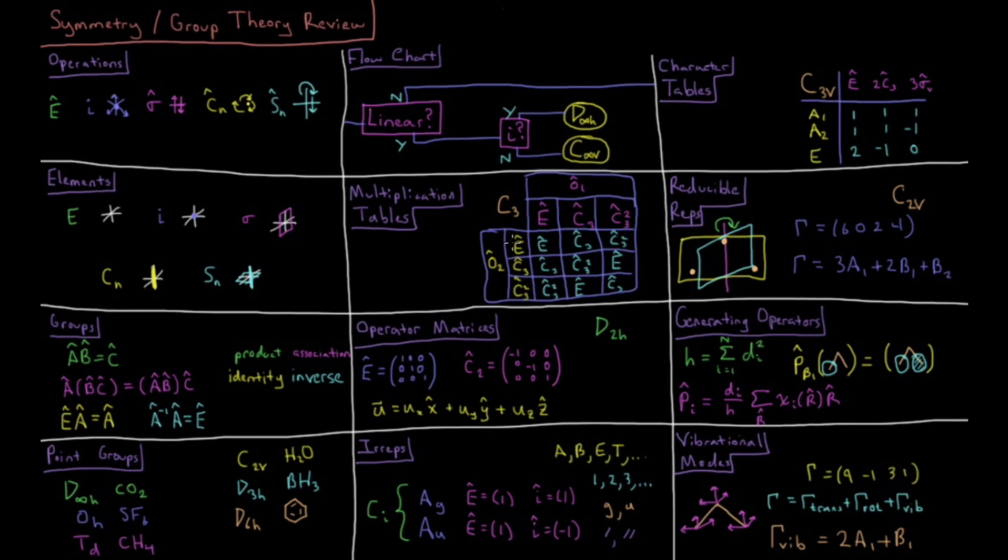The symmetry elements of a point group also multiply together in these kinds of tables called multiplication tables. So for any group, we can define the product operation of two symmetry operations, and what operation is the product of those two.